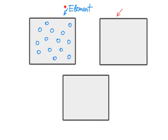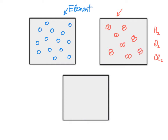Some elements are diatomic, such as hydrogen, oxygen, or chlorine. In their case we will see two identical atoms connected together with a chemical bond — for example oxygen O2, two atoms together. But those atoms are of the same kind, so we're still talking about a bunch of atoms of the same kind being together.